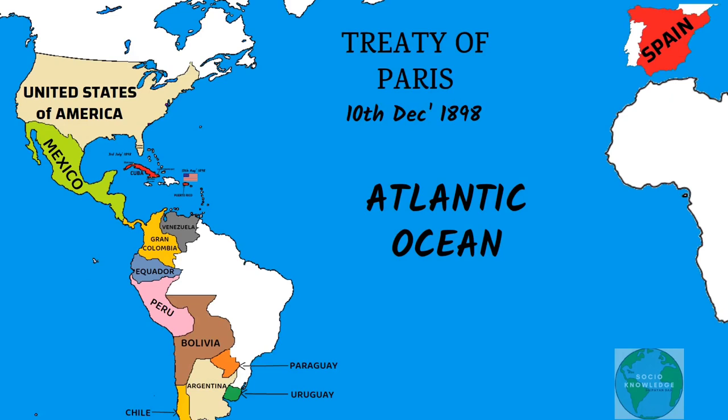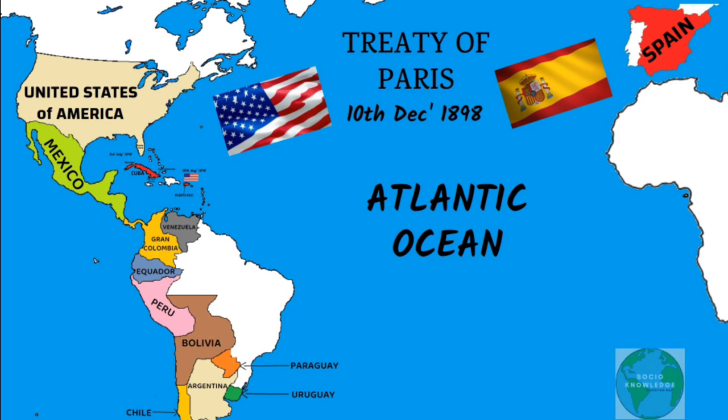After two months of negotiations, the Treaty of Paris was signed on December 10, 1898, in Paris. The US gained Spain's colonies of the Philippines, Puerto Rico, and Guam, and Cuba became a US protectorate until 1902. The Spanish-American War lasted only 16 weeks, between April 21, 1898 to August 13, 1898. This war marked the rise of the United States in world affairs, while Spain lost its last remaining colonies, bringing an end to the once mighty Spanish Empire.